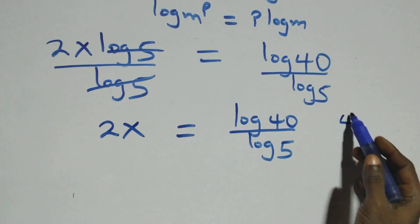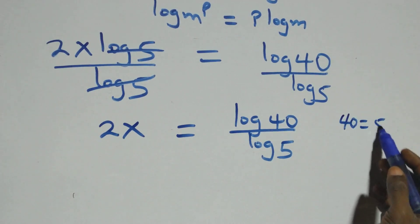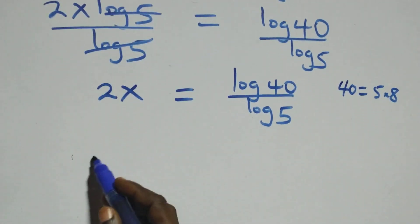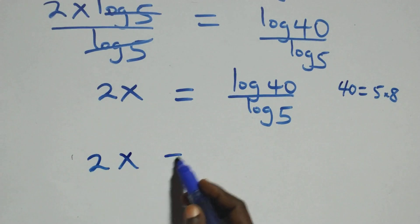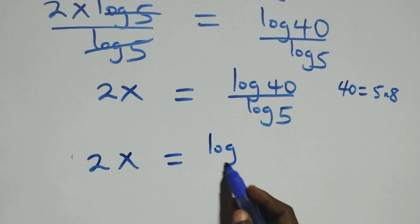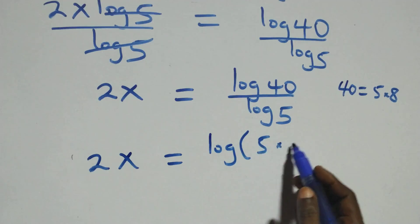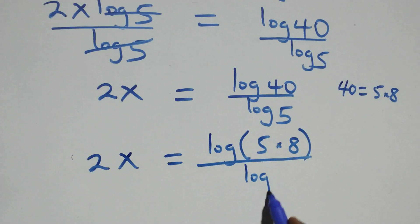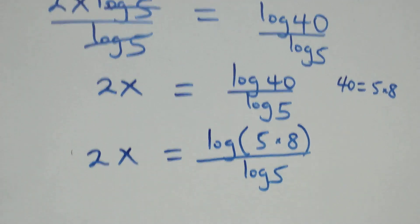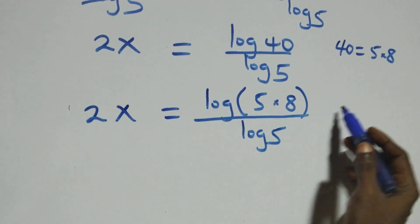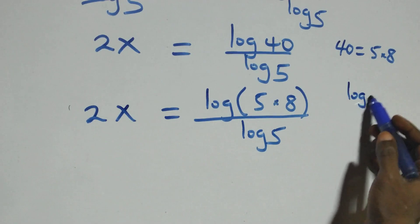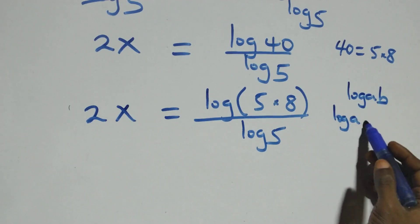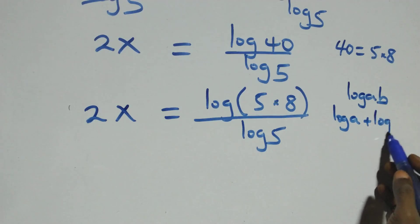From here, we can write 40 as 5 times 8. So what we have becomes 2x equals log(5 times 8) over log 5. Then we apply the product rule of logarithms: when we have log A times B, this is the same thing as log A plus log B.